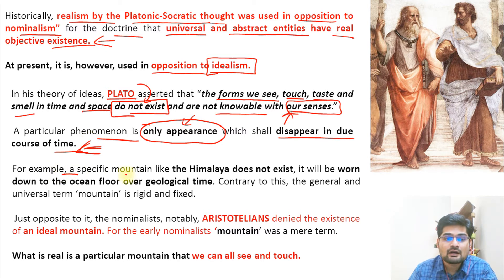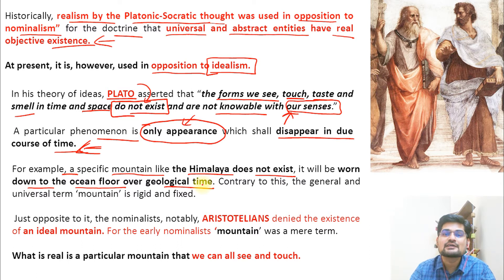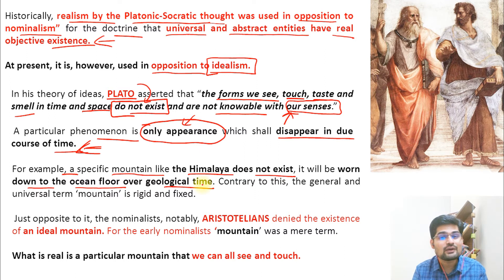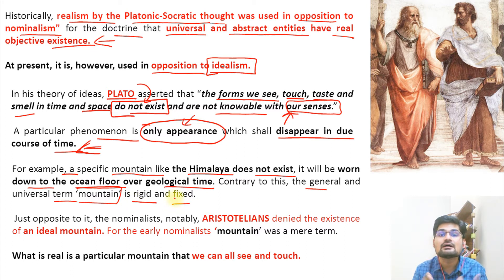For example, a specific mountain like the Himalaya does not permanently exist. It will be worn down due to several processes to the ocean floor over geological time. As we study in physical geography, surface erosion is happening and gradually it will reach base level. So what exists now — is it real? How can we say it is real if over time it will not be there? Contrary to this, the general and universal term 'mountain' is still rigid and fixed. This was the idea given in the earlier phase.